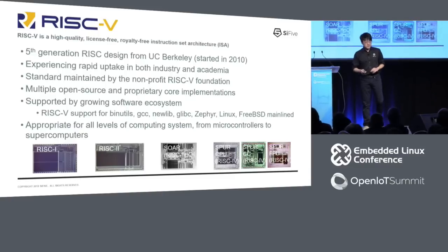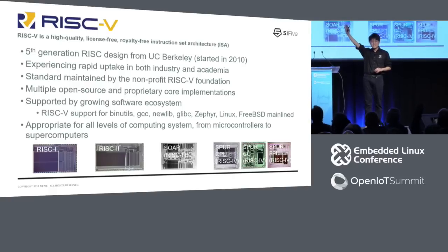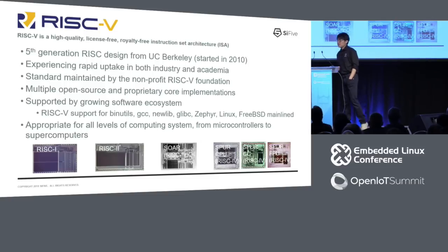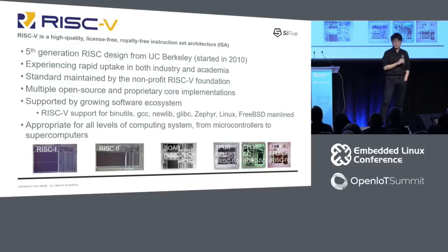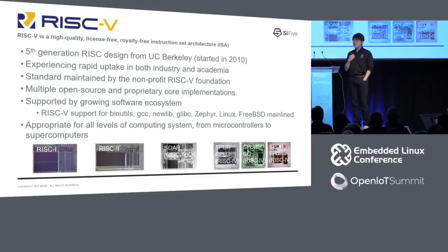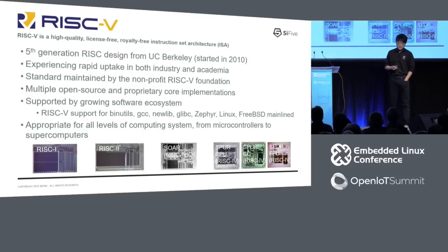So what is RISC-V? RISC-V is a high-quality, license-free, royalty-free instruction set architecture. Professor Dave Patterson at Berkeley started four RISC projects in the 1980s — RISC-1, RISC-2, RISC-3, RISC-4. RISC-V is a fifth-generation RISC design from UC Berkeley. I started the RISC-V project when I was a grad student at Berkeley in 2010 alongside my colleague and friend Andrew Waterman, and our advisors Chris Asanovic and Dave Patterson.